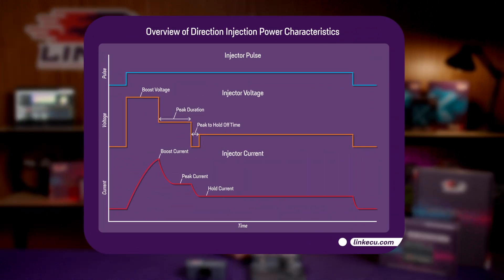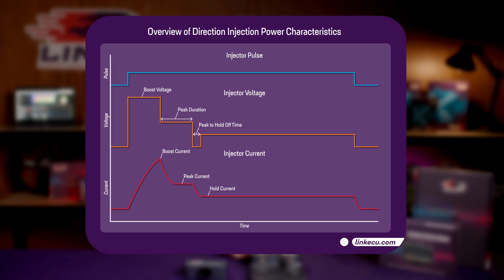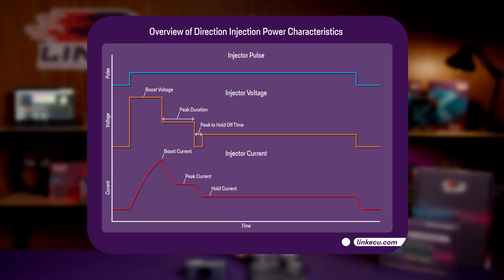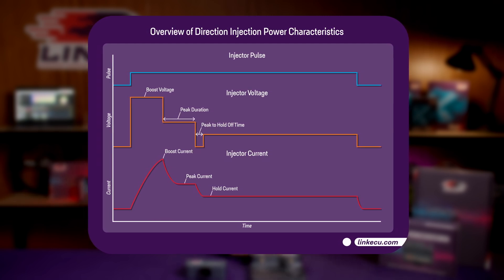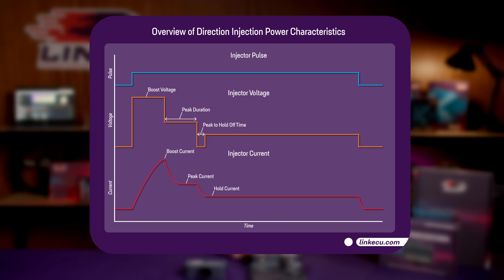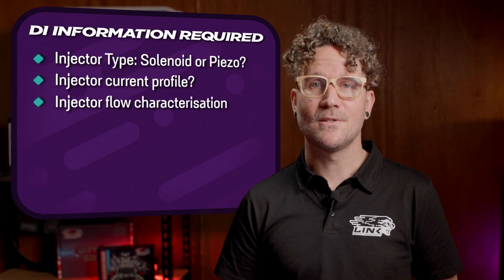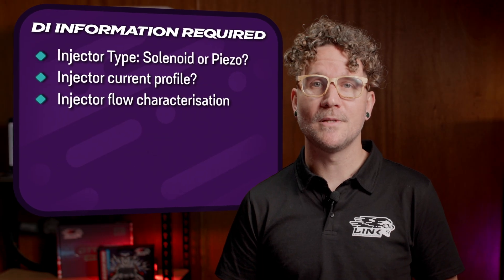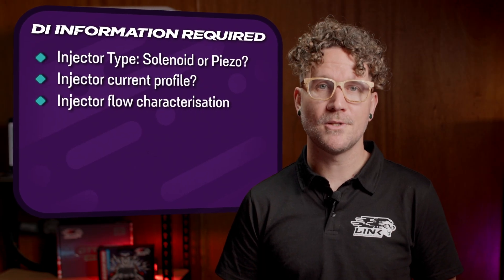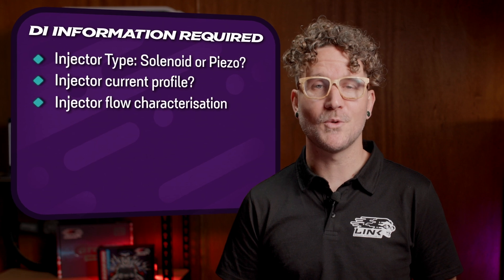The waveform will show the current profile of the injector, including initial peak current which opens the injector, the hold current which keeps the injector open, and the response times. Characterizing injectors also requires an expensive piece of equipment called a flow bench, specifically designed for direct injectors. You'll need to measure various parameters under controlled conditions, such as flow rate and injector dead times.